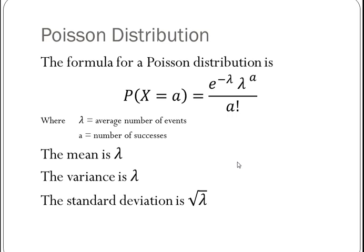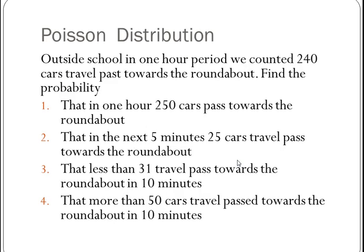The last time when I did this for the binomial, we then had a look at a question. Outside school, in one hour period, we counted 240 cars travelling by towards the roundabout. Find the probabilities. Let's think about this. Cars driving past a school, does that happen at random? Yes. Does it happen simultaneously? No, you can't have two cars drive past at the same time, because it's a single lane road. And if there are two driving past each other at the same time, one of them's a muppet.